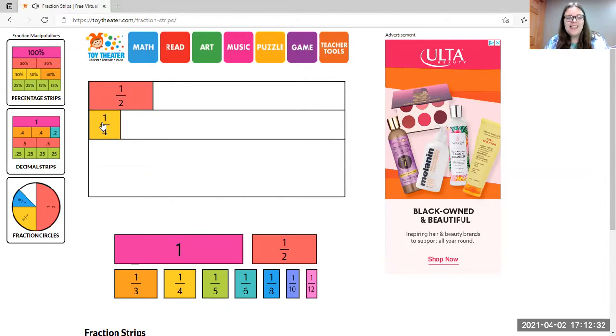And then you can see that one half is greater than one fourth. But then let's say you wanted to see how many fourths it took to make a half. You could just drag another fourth up here until you see that they're equal. So this website gives you a lot of different options about how you might be comparing.